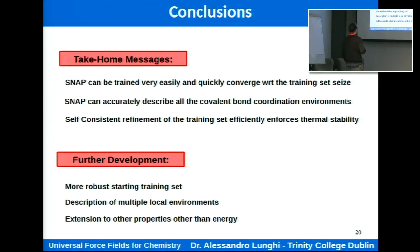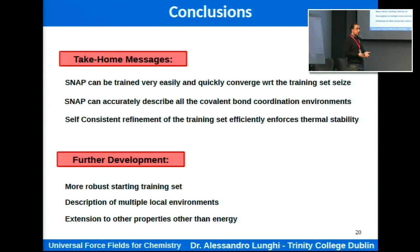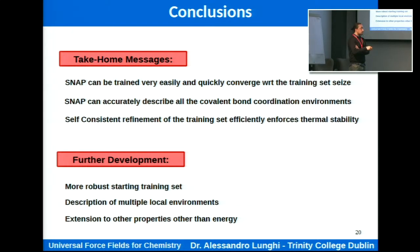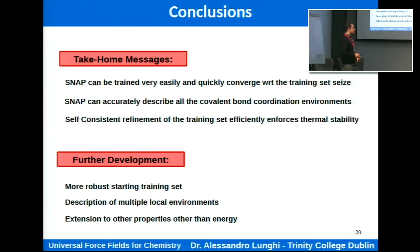To conclude, there are three main take-home messages. First, this is a very simple model — much simpler than deep learning — but it can describe with good accuracy both organic chemistry and transition metal chemistry, making it a general model for molecular systems. Second, it is very easy to train: just a few hundred configurations are usually sufficient for production molecular dynamics runs, especially when using self-consistent refinement of the training set. We are still working on defining a more robust starting training set to reduce the number of configurations needed during MD.